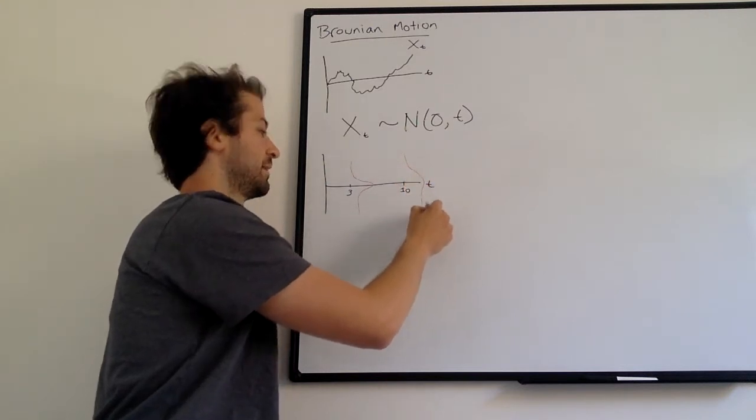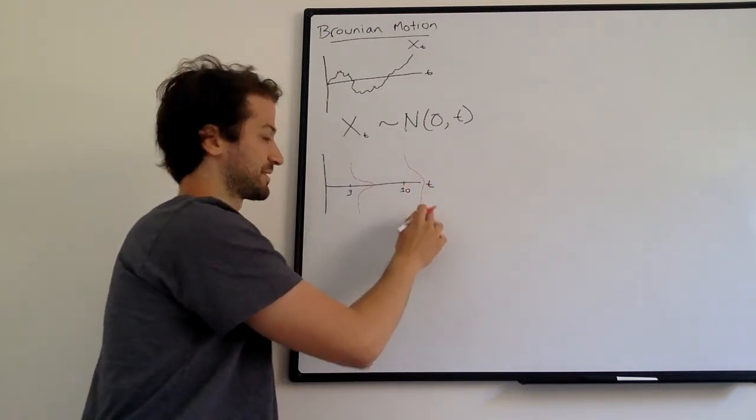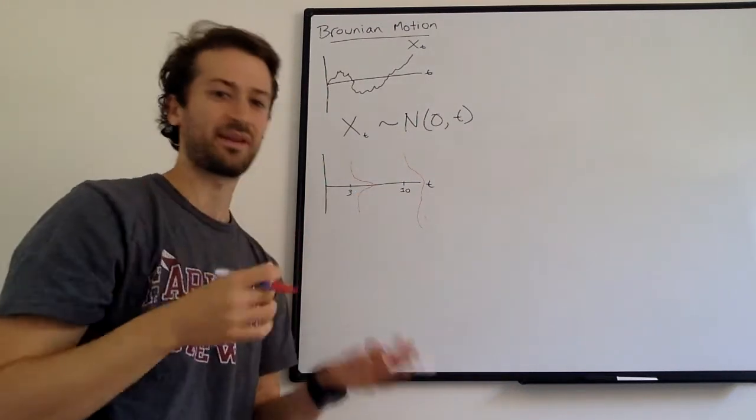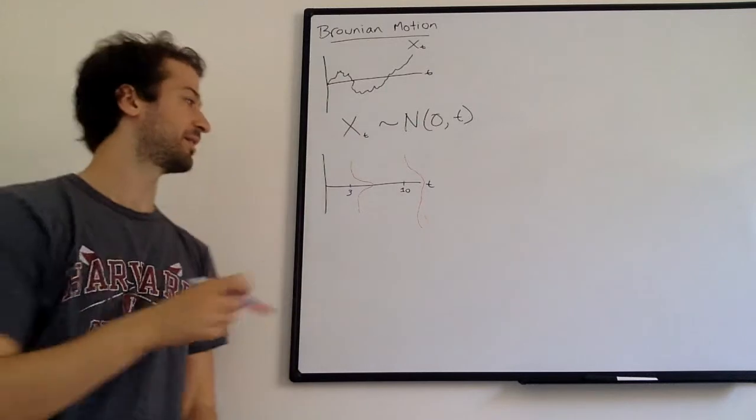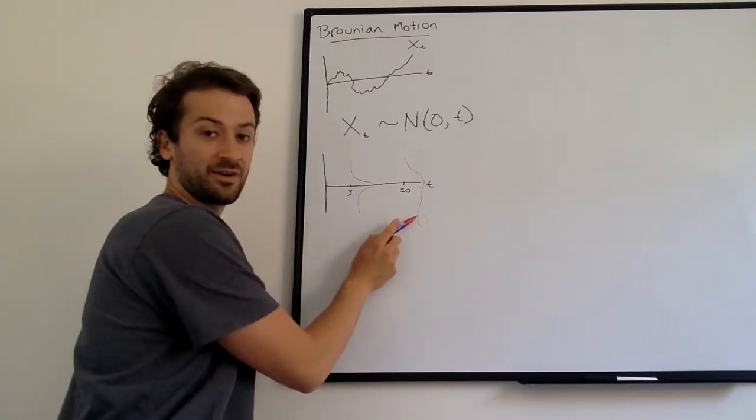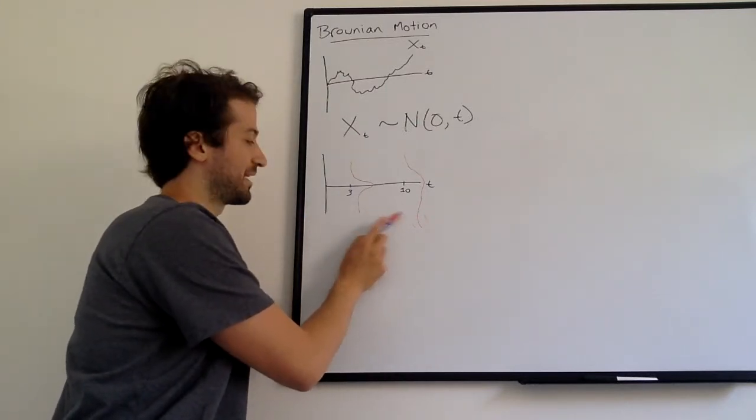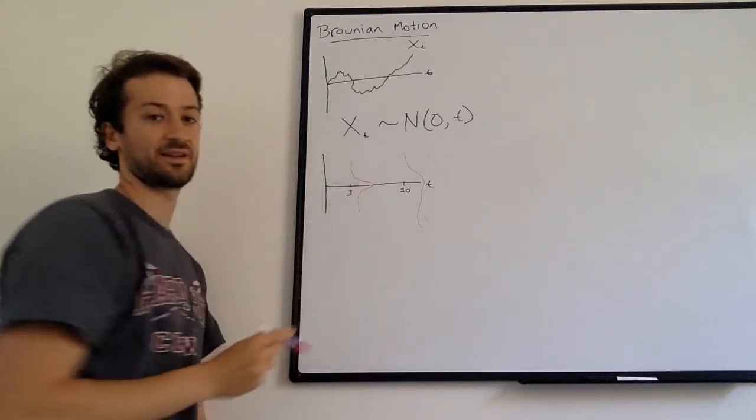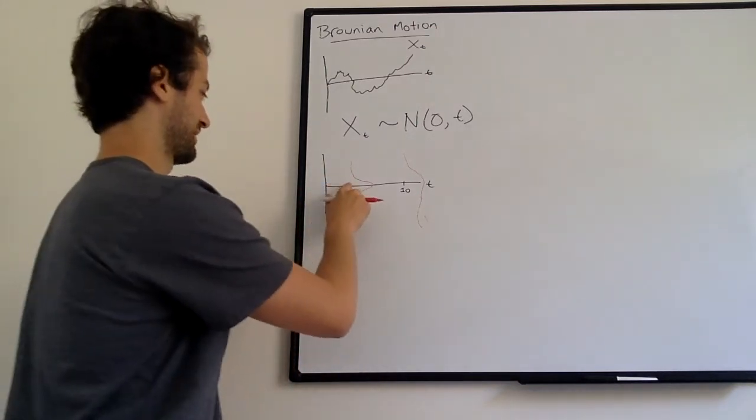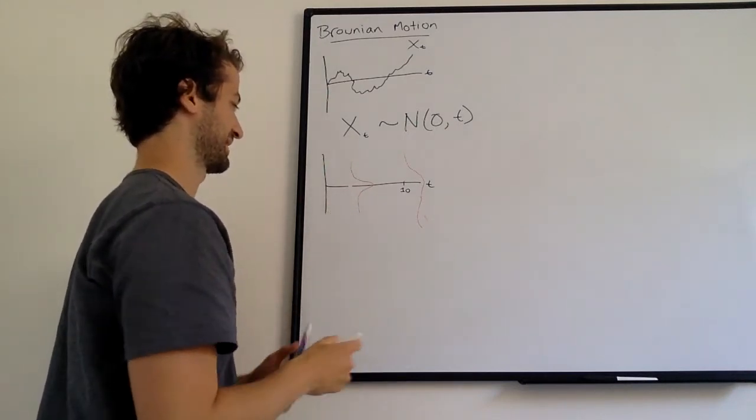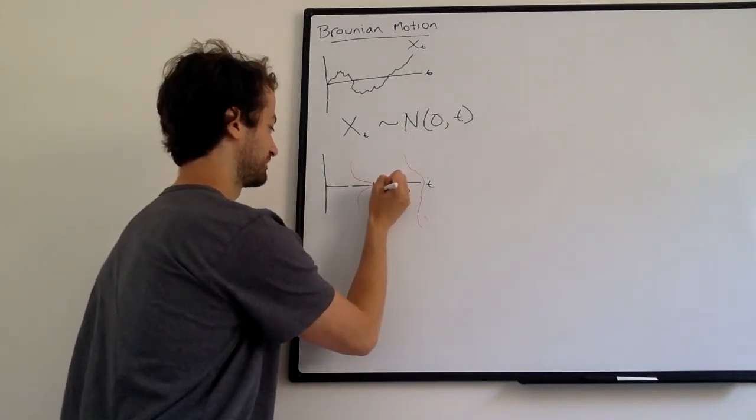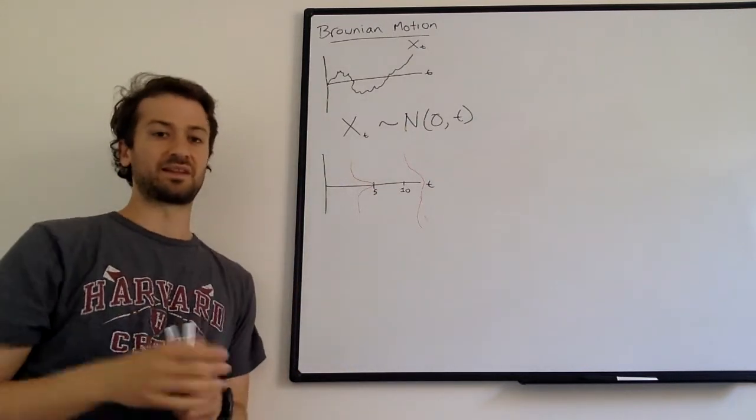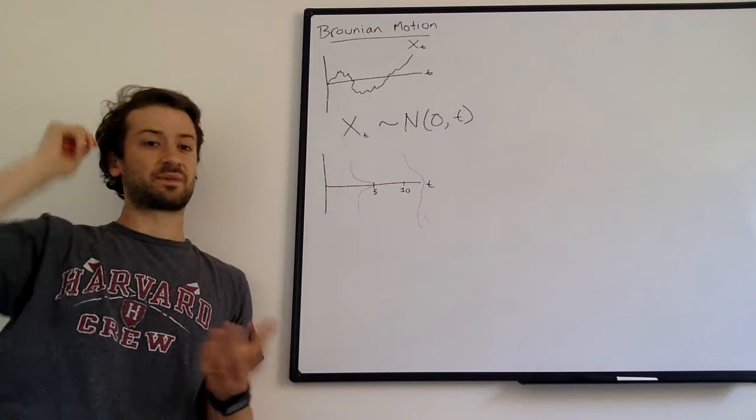Whereas at time ten, you can see how it's still centered at zero, but the variance is a little bit wider, right? We're less sure, and that makes sense because it has more time to move around. So like, a value out here is more likely at time ten than it is at time three. So that's kind of the idea, is the longer that this is going, the more variance it has, which kind of makes sense.